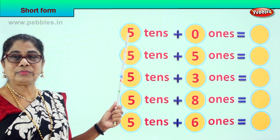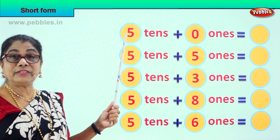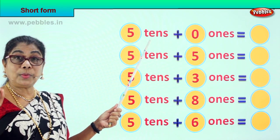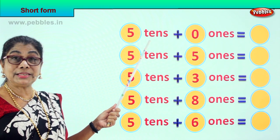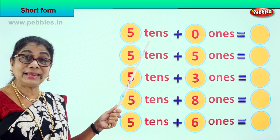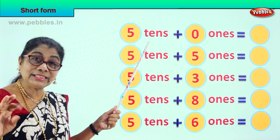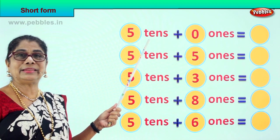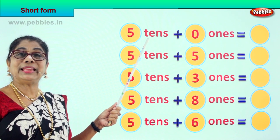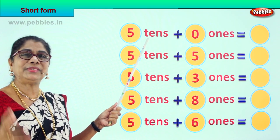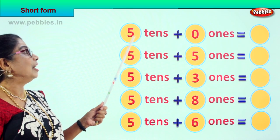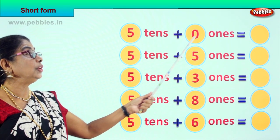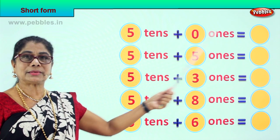Look, we have here 5 tenths: 1 tenth, 2 tenths, 3 tenths, 4 tenths, 5 tenths. What is 5 tenths? 5 tenths plus 0 ones.